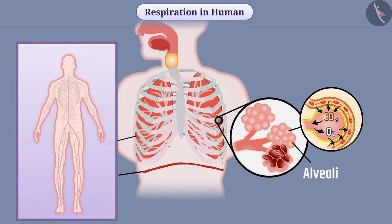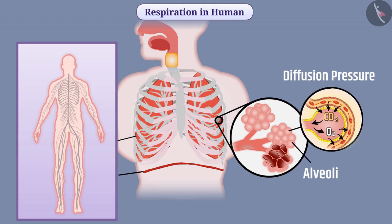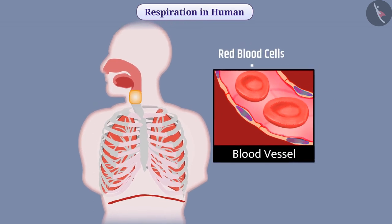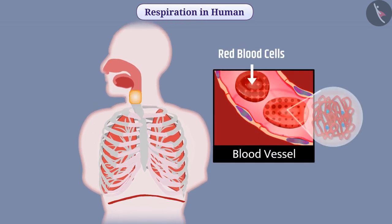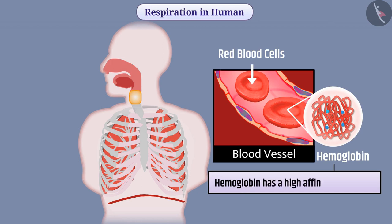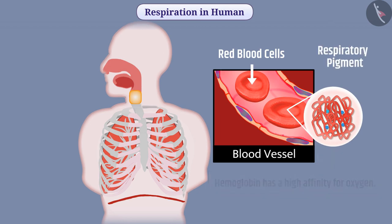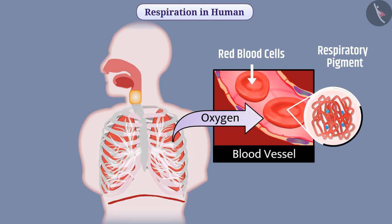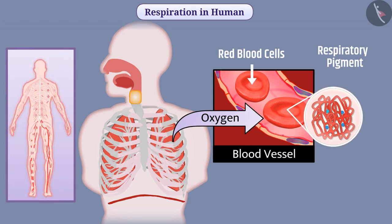The size of the human body is large, so diffusion pressure is not sufficient to carry oxygen to all tissues. Therefore, red blood cells present in the blood contain hemoglobin. Hemoglobin has a high affinity for oxygen. The respiratory pigment hemoglobin takes oxygen from the air of the alveoli and carries it to all tissues and each cell of the body.